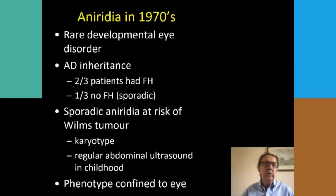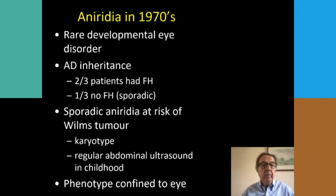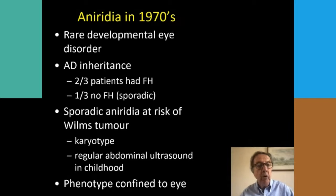In 1977 we knew it was a rare developmental eye disorder causing visual impairment. We knew that most patients had a family history of the condition, but about a third of patients had no family history and was said to be sporadic. Sporadic aniridia was known to be at increased risk of Wilms tumour, a childhood kidney tumour, and we knew that sometimes you could see a microscopic change in the chromosome spread down a microscope on chromosome 11. Because of this increased risk of kidney tumour and the better prognosis with earlier diagnosis, children underwent regular abdominal ultrasounds in childhood to pick this tumour up early.